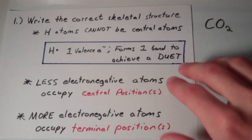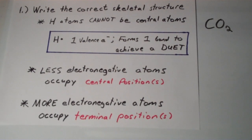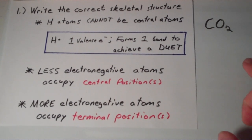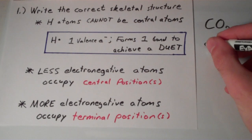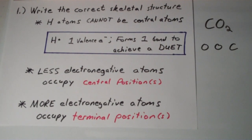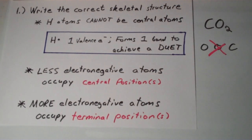A second guideline is that usually the less electronegative atoms occupy central positions while more electronegative atoms occupy terminal positions. So if we apply these guidelines to the CO2 molecule, the correct skeletal structure of this wouldn't be OOC because oxygen is more electronegative than carbon. So oxygen would not be the central atom in this case.